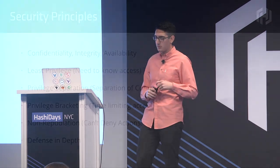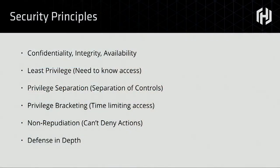The most basic one is confidentiality, integrity, and availability — coined by the CIA, a fun three-letter acronym. Really looking at how do we keep our confidential material confidential from eavesdroppers, from people who shouldn't have access, from outside parties. How do we ensure the integrity of it so it's not tampered with or changed without us realizing? And how do we make sure these systems are available, because they may be under attack by people who can force the system into being unavailable.